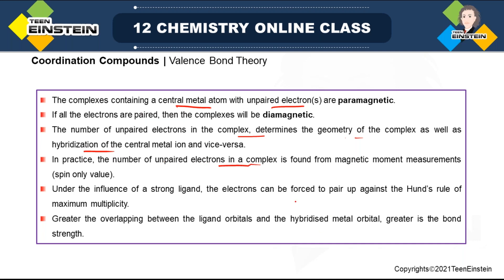In practice, the number of unpaired electrons in a complex is found from magnetic moment measurement — the spin-only formula: μ(spin only) = √(n(n+2)), where n is the number of unpaired electrons. If n is known, you can calculate μ; if μ is known, you can calculate n and hence determine how many unpaired electrons are present.